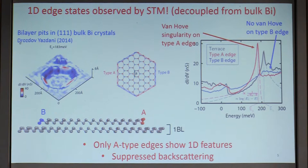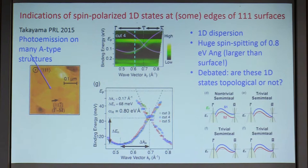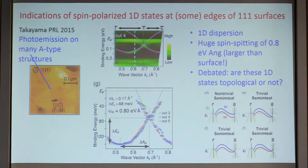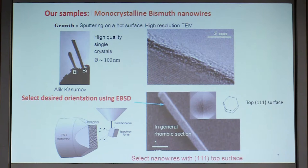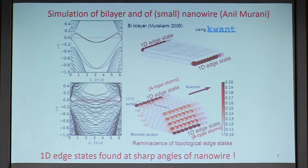They also demonstrated suppressed backscattering at these edges. 1D edges have also been seen by photoemission, where people take only triangles — only the A-type edges — and demonstrate 1D states. So 1D states, even on bulk bismuth at the 111 surfaces, have been seen, and whether they're topological or not is debated. This is where we come in. Ali Kazumov grows these monocrystalline bismuth nanowires by sputtering. We scrape them off a surface, put them on a silicon chip, and choose with backscattering diffraction of electrons in an electron microscope those wires that have a top 111 surface — selecting wires that have these potentially topological 1D surfaces.